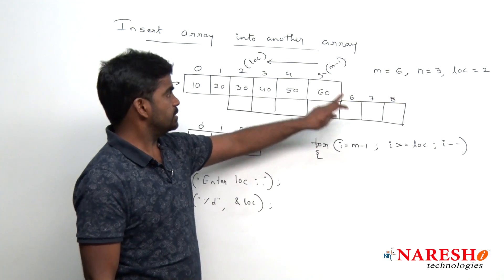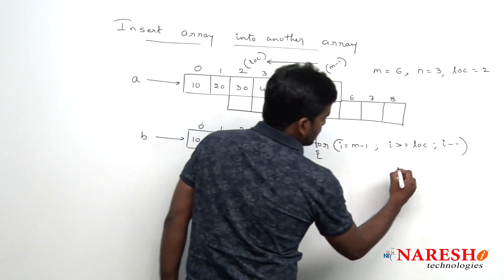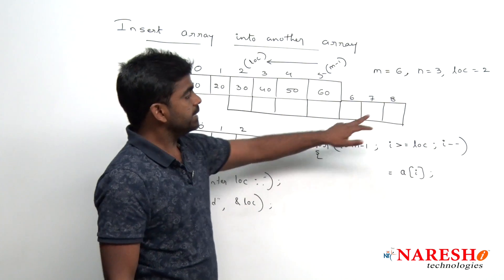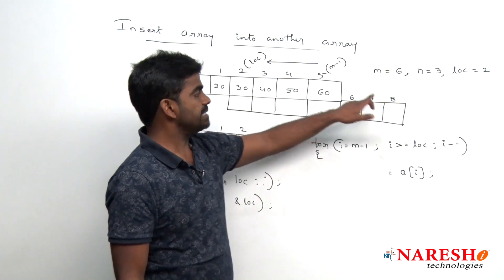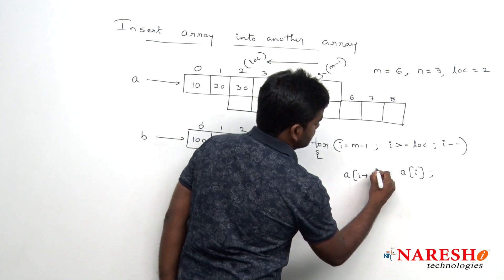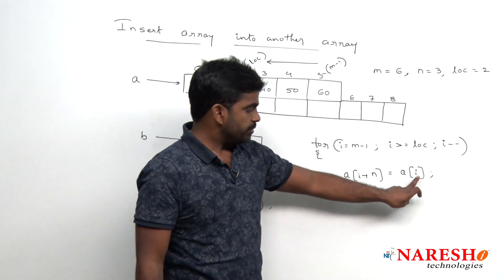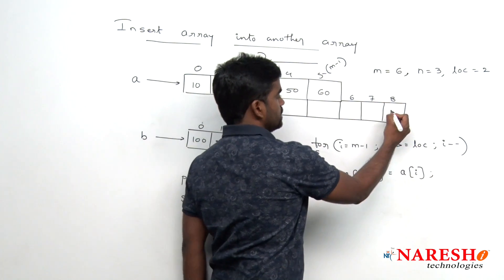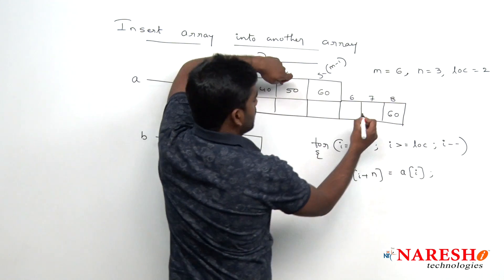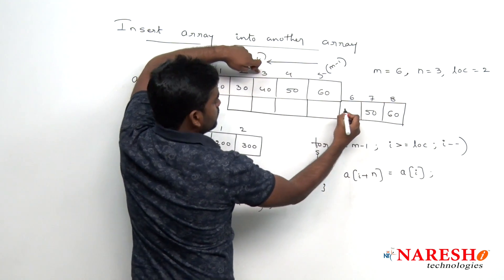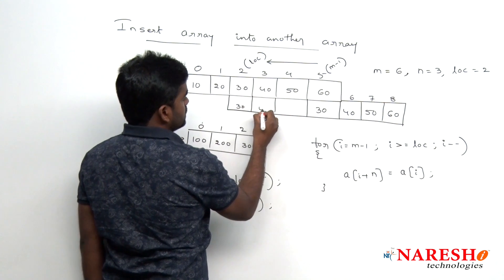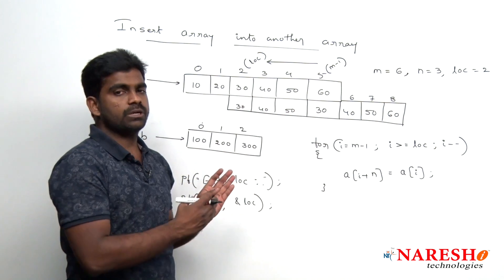With i starting at m minus 1 which is 5, the fifth location element a[i] is stored into a[i + n], that is position 5 plus 3 equals 8. So 60 moves to position 8. Then 50 at position 4 moves to position 7, 40 at position 3 moves to position 6, and 30 at position 2 moves to position 5. This is how we shift the elements, leaving copies at positions 2, 3, 4 temporarily.